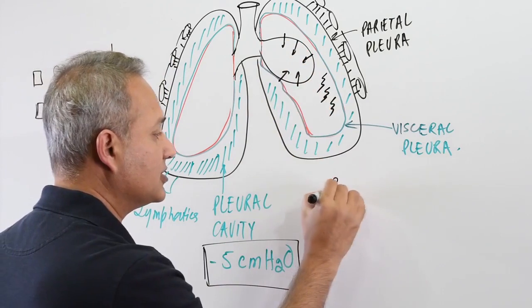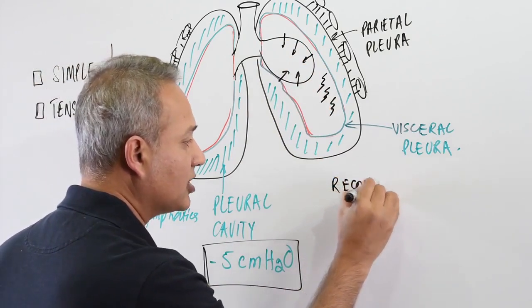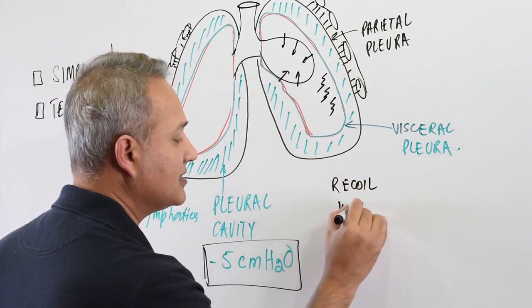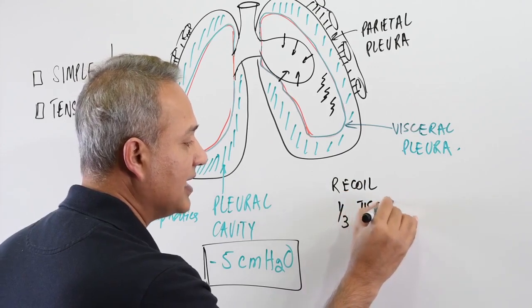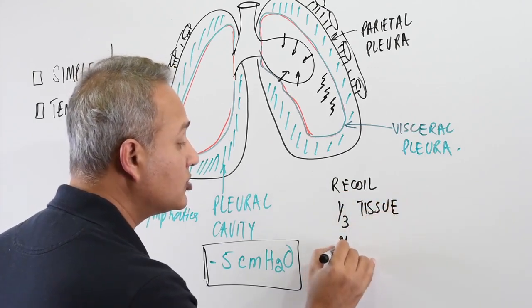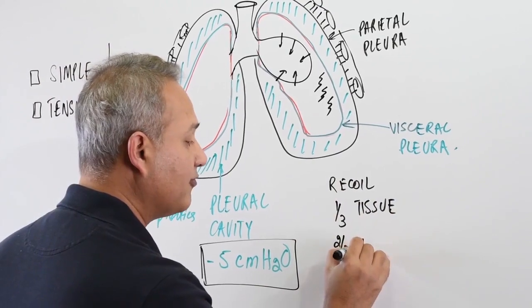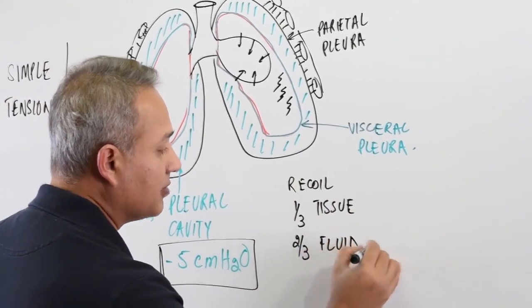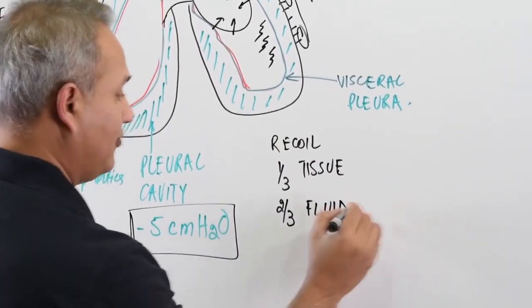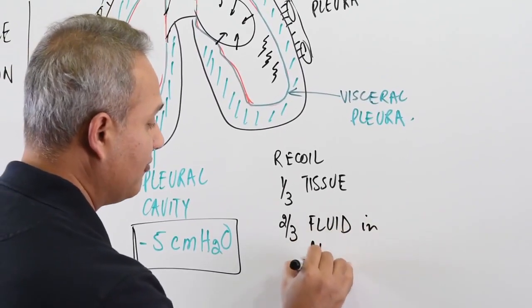So this is the recoil forces, we've talked about it. One-third is the tissue elastin and fibrin. Two-thirds of the forces are the fluid present in alveoli, fluid in alveoli.